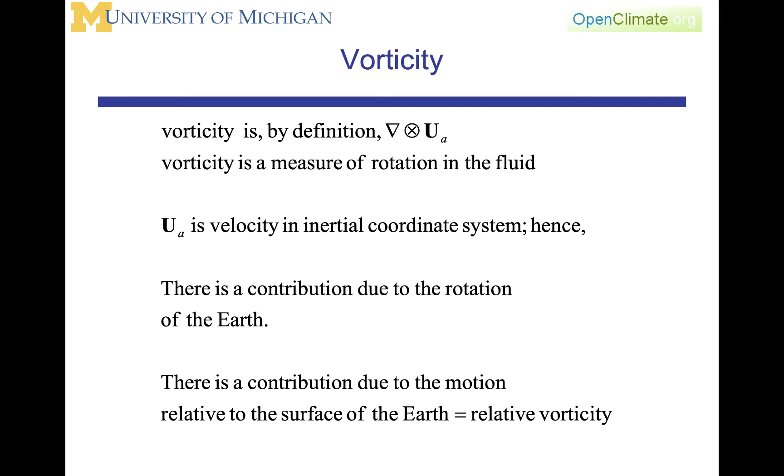By definition, vorticity is the curl, del cross the velocity field. In this case, we've written the velocity vector as u sub a, where a is representing the absolute velocity, meaning that it is the velocity of the earth plus the relative velocity of the atmosphere relative to the earth. Vorticity is a measure of rotation in the fluid.